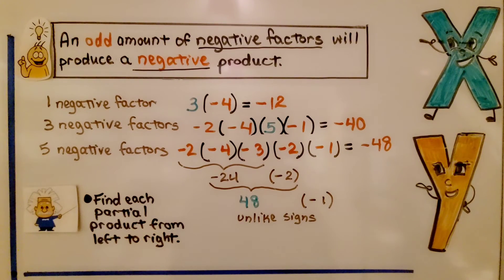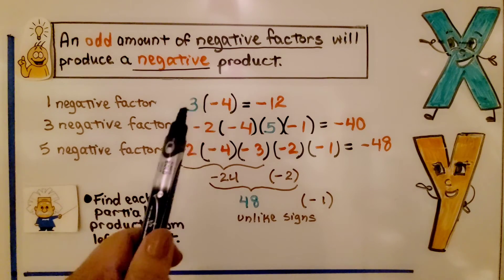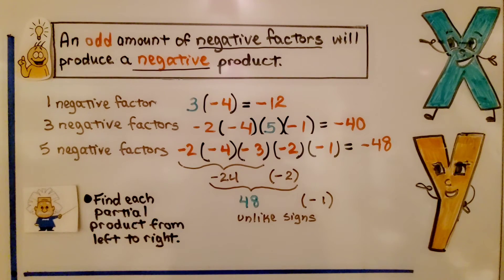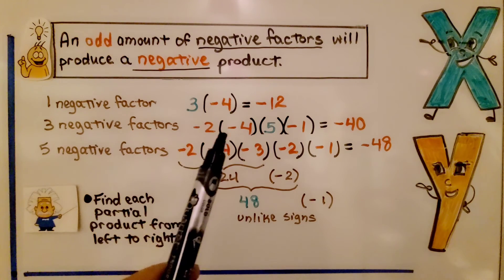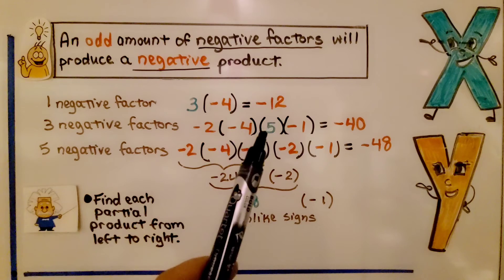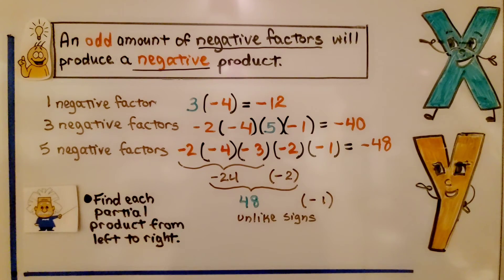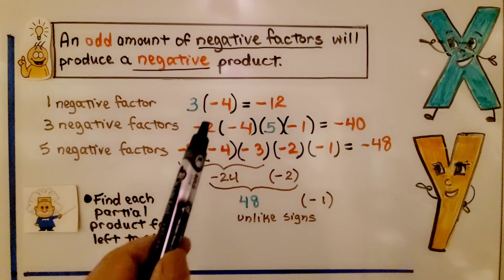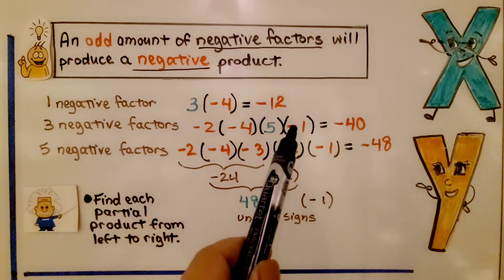An odd amount of negative factors will produce a negative product. With only one negative factor, the signs are unlike, giving negative 12. Here we have three negative factors: negative 2, negative 4, and negative 1, plus one positive. Three is odd, so the product will be negative. Negative 2 times negative 4 is positive 8. Positive 8 times positive 5 is positive 40. Positive 40 times negative 1 is negative 40.